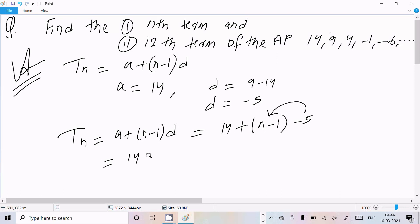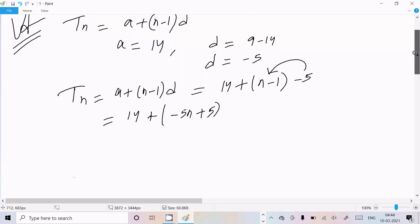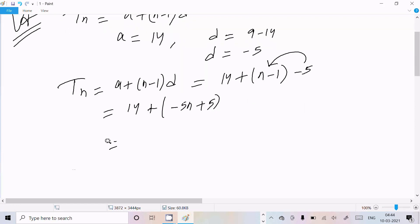So here 14 minus 5, this multiply with n, so this comes minus 5n and minus 5 into minus 1 that comes plus 5. And here after 14 plus 5 minus 5n, and here equal to 19 minus 5n, this is Tn.